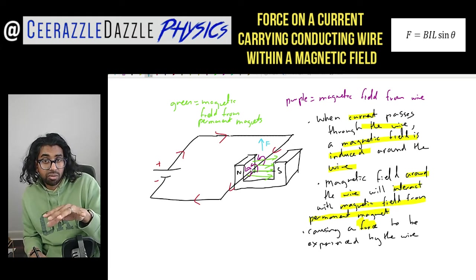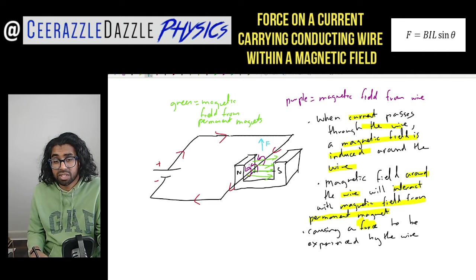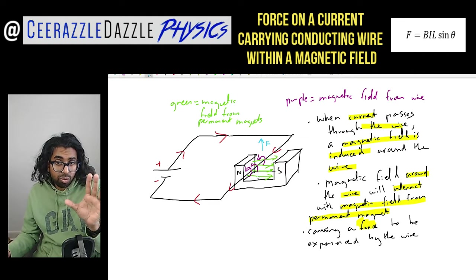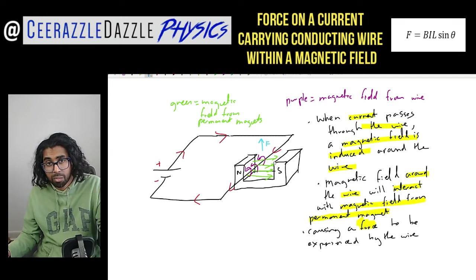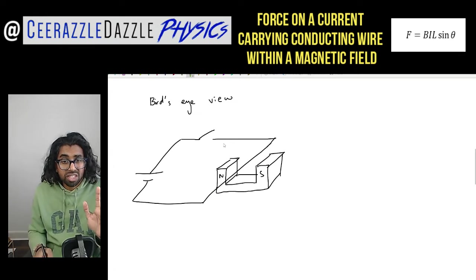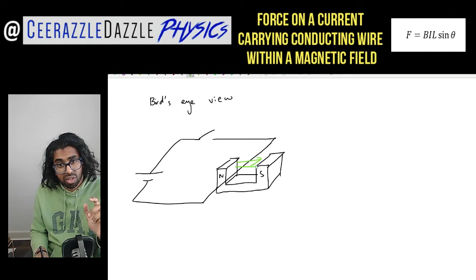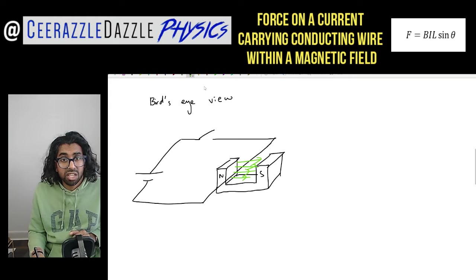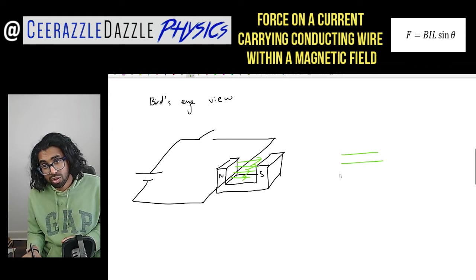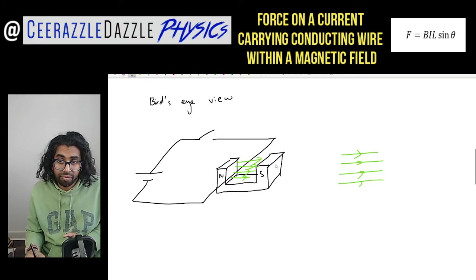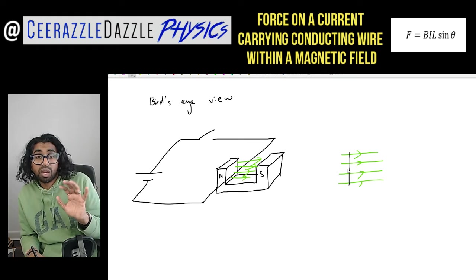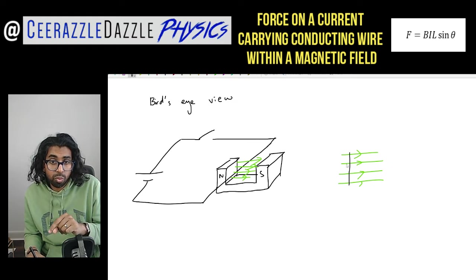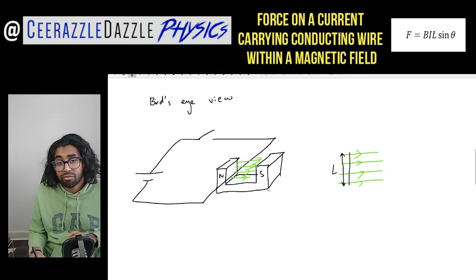We've seen that at a lower level, but now we're going to do this in more detail since this is A-level physics. Let's redraw the same diagram from a bird's eye view. The permanent field goes across, and the wire runs like this. Looking top-down, you'd see the field lines go across and the wire within the field — that's the wire I'm focusing on within the field.